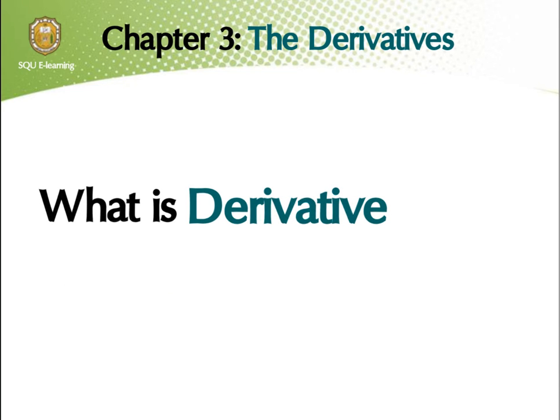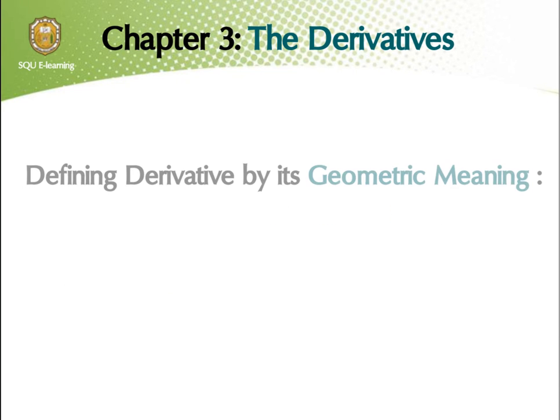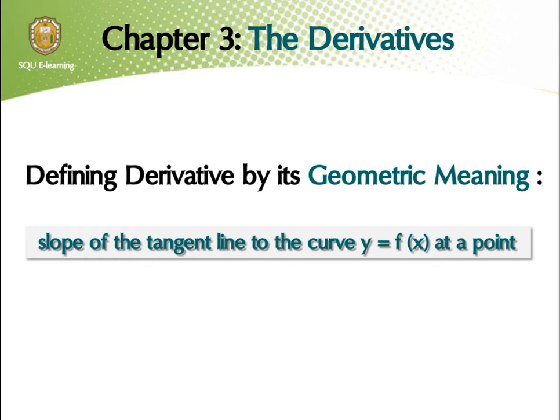What do you know about derivative? One interpretation is a geometric one for the derivatives that it's going to be the slope of the tangent line to the curve y is equal to f of x at a point.